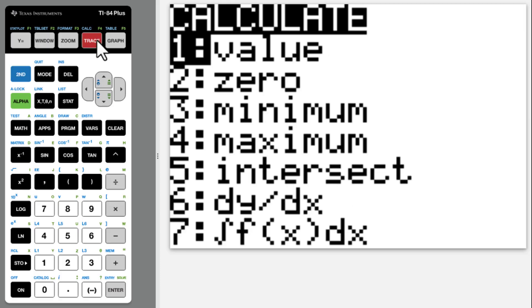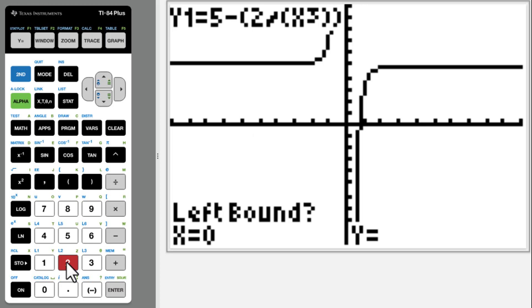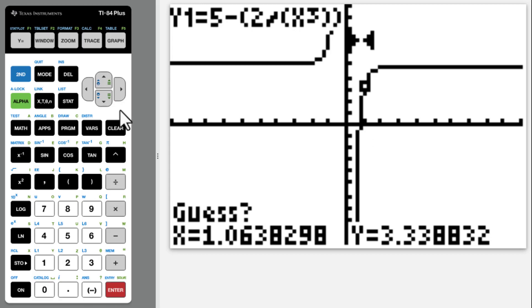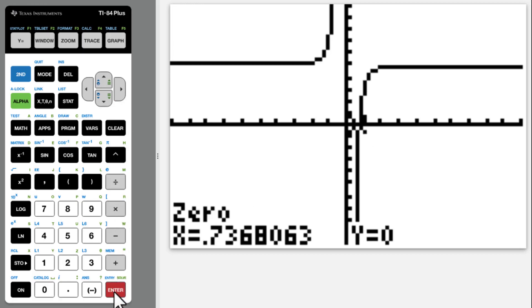Second trace. Zero. We know x equals 0 is the asymptote line. Move the cursor to the left side of the x intercept. Enter, enter, enter. Then move the cursor to the right side of this x intercept. Enter, enter. X equals 0.737 as a three significant fix.